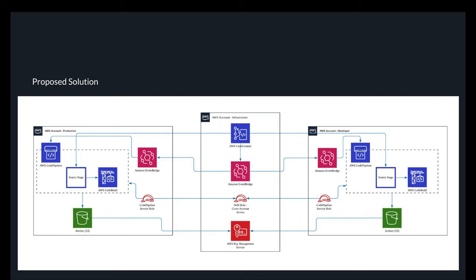We're using cross-account IAM roles and a KMS key management service to store KMS keys for the artifact S3 buckets per account. The AWS CodeCommit is connected with CodePipeline as a source stage, making it the single source of truth. EventBridge is used so that any changes to a particular branch — for example, the develop branch — will trigger the EventBridge in the develop account to trigger the pipeline, pull the code from the infrastructure account, run the build, and store artifacts in the S3 bucket.